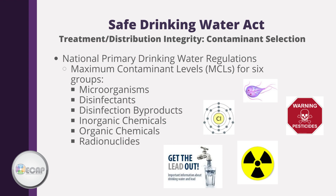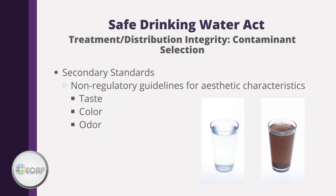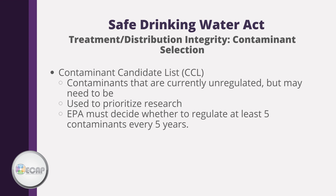The National Primary Drinking Water Regulations developed maximum contaminant levels for six groups: microorganisms, disinfectants, disinfection byproducts, inorganic chemicals, organic chemicals, and radionuclides. The Safe Drinking Water Act also includes secondary standards — non-regulatory guidelines focusing on aesthetic characteristics such as taste, color, and odor — which assume the water still meets health-based requirements. The Act also requires the EPA to develop a contaminant candidate list of unregulated contaminants that may need future regulation, published every five years, with the EPA required to consider at least five contaminants for regulation.